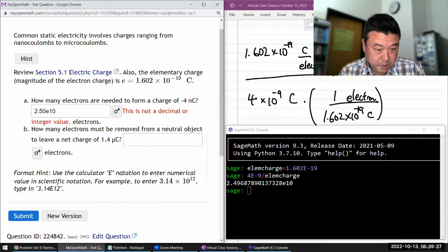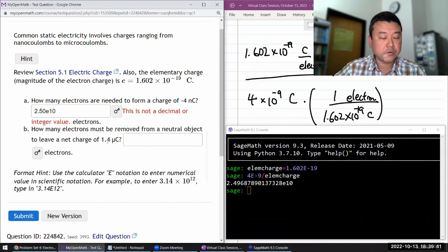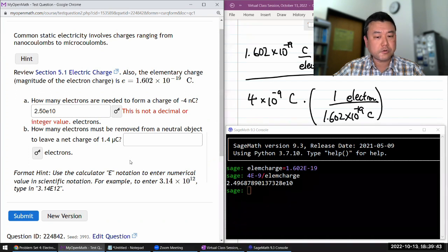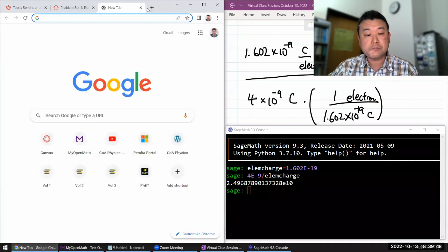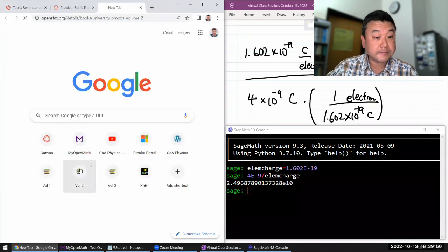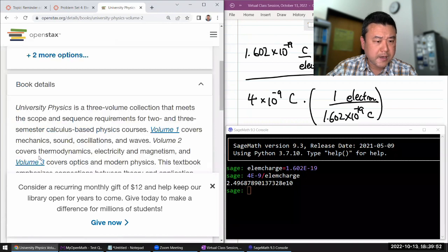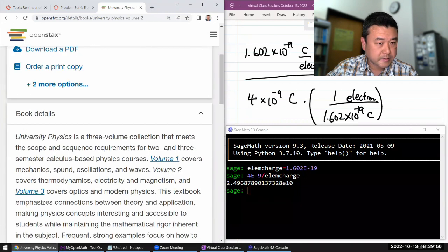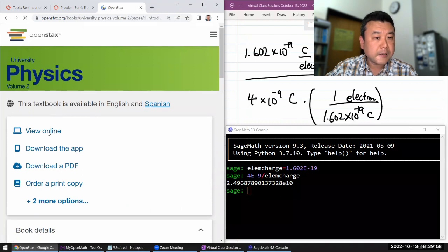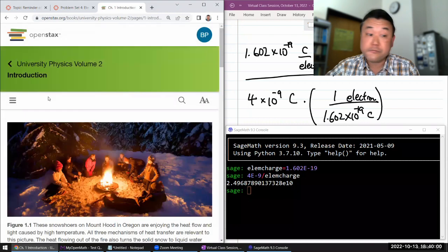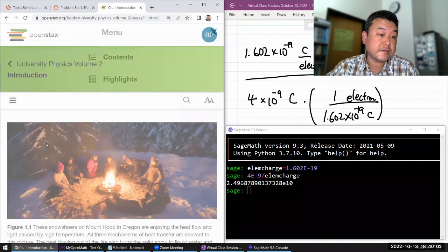How many electrons must be removed from a neutral object to leave a net charge of 1.4 microcoulombs? By the way, because this has come up, you should have SI prefixes memorized. I think your textbook has an appendix that has SI prefixes. Let me see here.